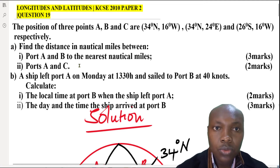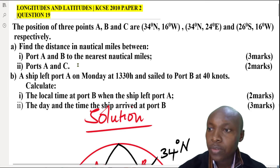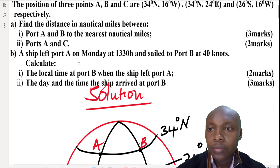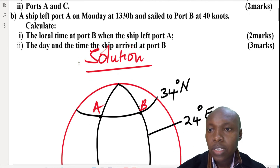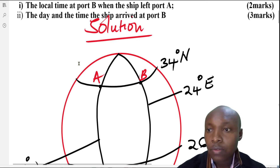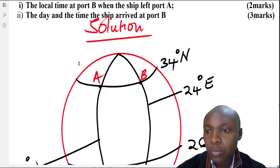Let's go to the solution. Starting with the first part of the question, finding the distance in nautical miles between ports A and B. We need to identify the location of A and B and sketch the two places.